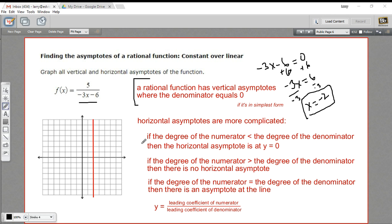And the rules are, if the degree of the numerator is less than the degree of the denominator, and that's the case here, we have the zero power of x on top, we have x, so x to the first on the bottom. When that's the case, the horizontal asymptote is always at y equals zero. So we could just go ahead and draw that in.